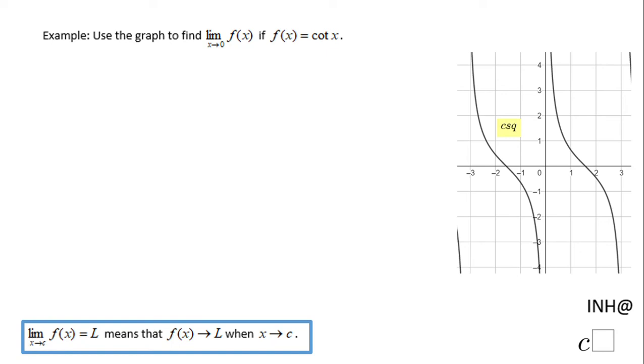Welcome or come back. I need help at C squared. In this example we need to find the limit when x approaches zero of f of x, and f of x is cotangent of x. We're going to use the graph here. The graph shows us cotangent of x.